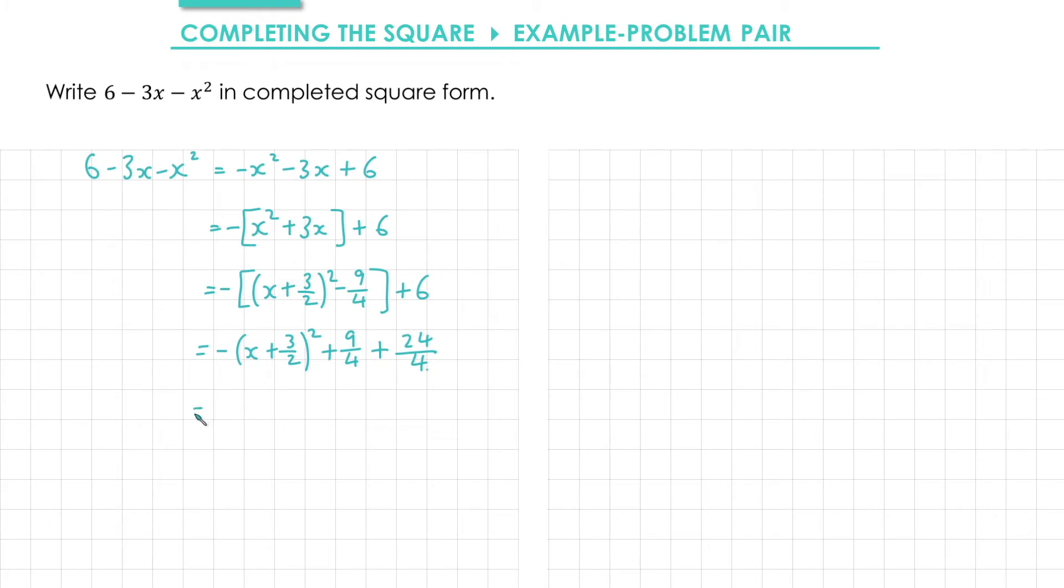Finally, we're going to simplify. However, as this term is negative and this term is positive, it's conventional to write the positive term first. 9 over 4 plus 24 over 4 gives me 33 over 4. And then I'll leave the other term as it is. It's not wrong if you reorder the terms, but it just looks nicer with the positive term at the front.